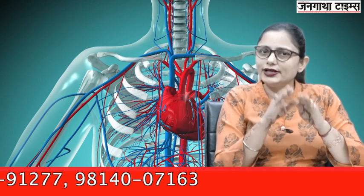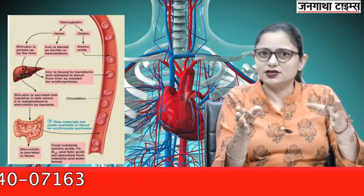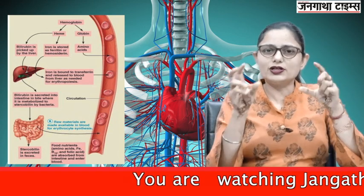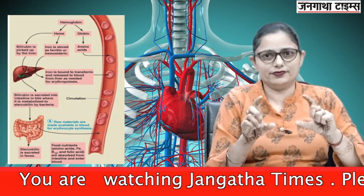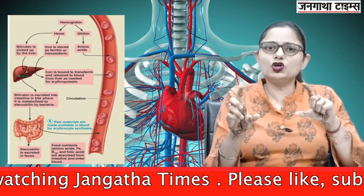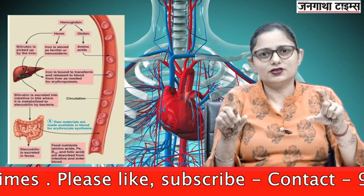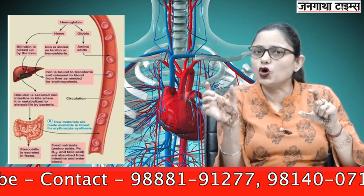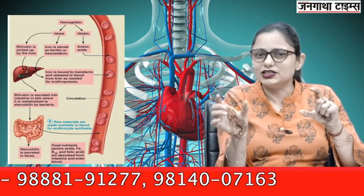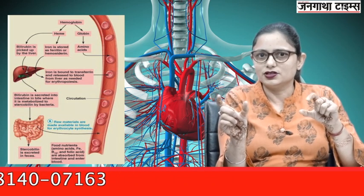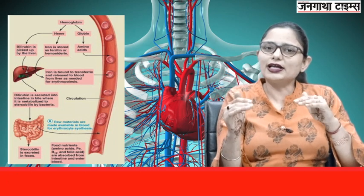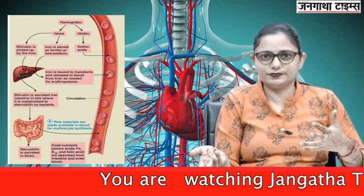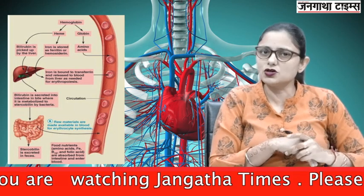When RBCs die, all other components are phagocytosed and what is left is hemoglobin. Hemoglobin is formed of heme and globin. The globin part is formed of proteins — a polypeptide chain. These proteins break down into amino acids, which are reused in the body for further protein synthesis.